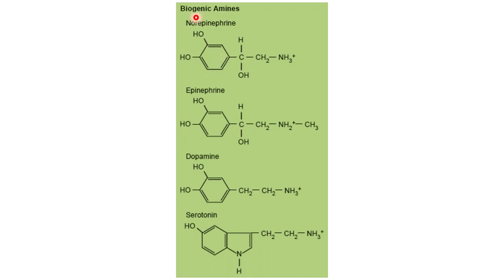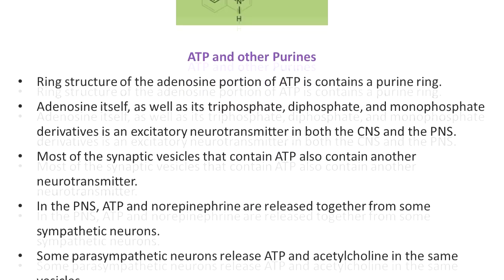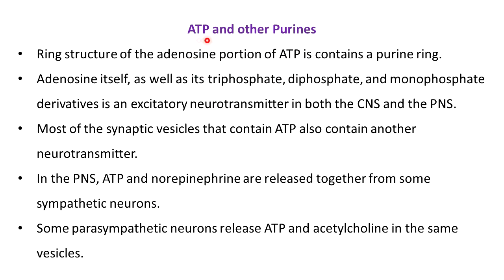These are some biogenic amines we have learned about. This one is the structure of norepinephrine, then epinephrine, dopamine, and serotonin. If you look carefully, there is one common structural feature — all of them are made from the amino acid tyrosine.